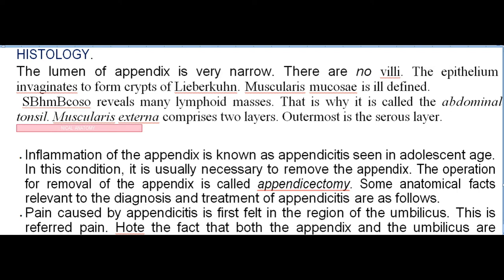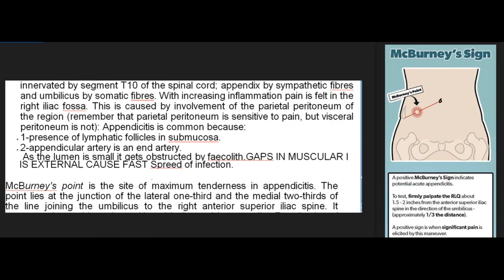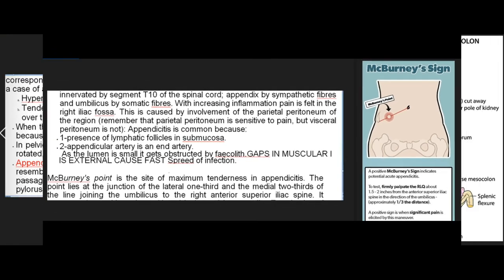Pain caused by appendicitis is first felt in the region of the umbilicus as referred pain — both the appendix and the umbilicus are innervated by segment T10 of the spinal cord (appendix by sympathetic fibers, umbilicus by somatic fibers). With increasing inflammation, pain is felt in the right iliac fossa due to involvement of the parietal peritoneum, which is sensitive to pain unlike the visceral peritoneum. Appendicitis is common because of lymphatic follicles in the submucosa, the appendicular artery being an end artery, the small lumen being obstructed by a faecolith, and gaps in the muscularis externa facilitating spread of infection.